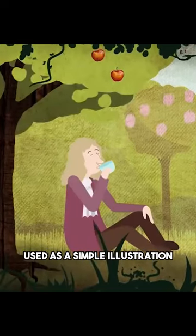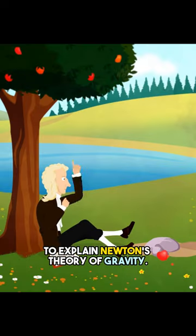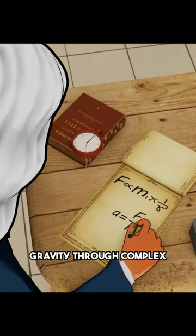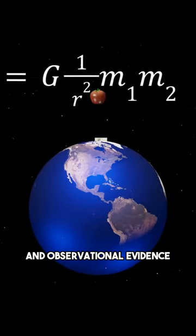The apple story is often used as a simple illustration to explain Newton's theory of gravity. In reality, Newton developed his theory of gravity through complex mathematical equations and observational evidence.